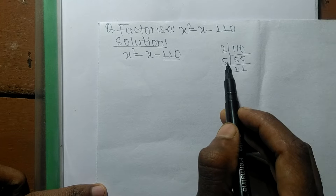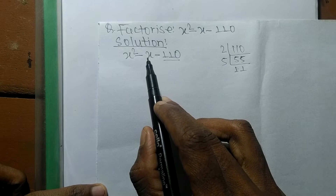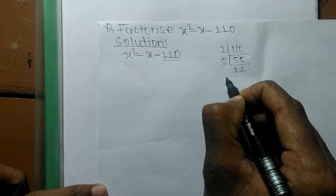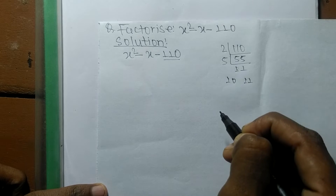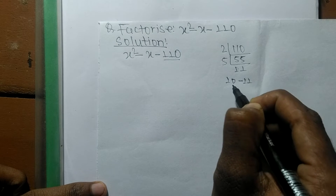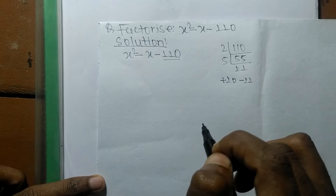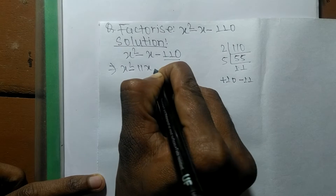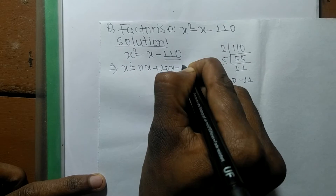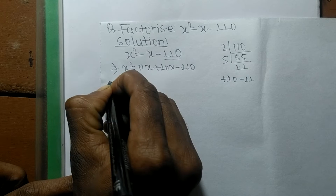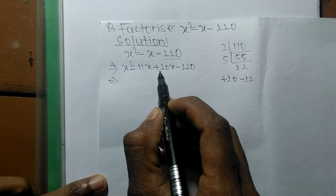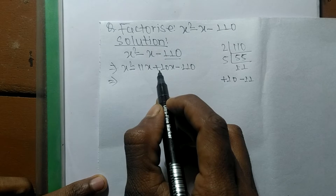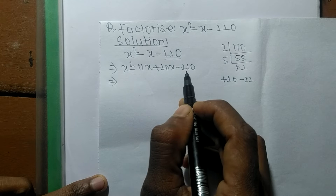From these prime factors, we have to multiply numbers such that their sum gives the middle term coefficient. Multiplying 2 and 5 gives 10, and the remaining factor is 11. So minus 11 plus 10 gives minus 1, meaning we can rewrite the expression as x squared minus 11x plus 10x minus 110.